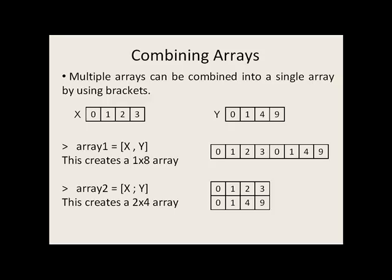Multiple arrays can be combined into a single larger array using brackets. In this example, we have x, which is a 1 by 4, and y, which is a 1 by 4. We can create a 1 by 8 array by putting x and y in brackets and separating them with a comma. The first four elements of array1 will be the same array elements as in x. The last four array elements will be the same ones as in y.